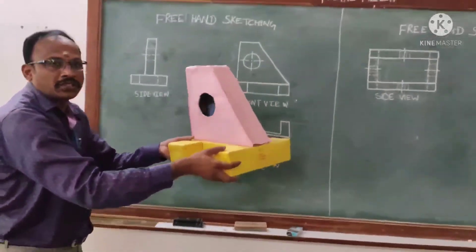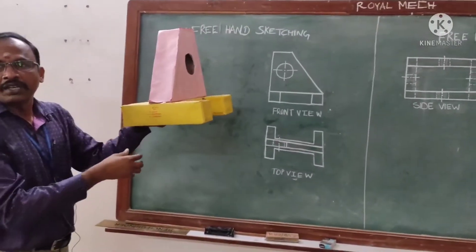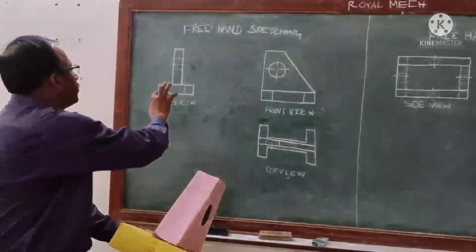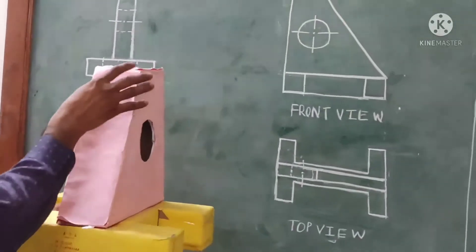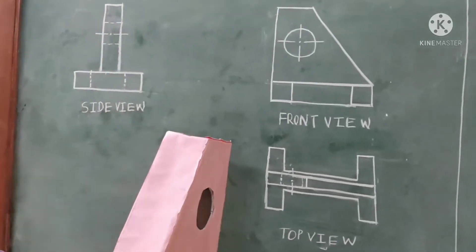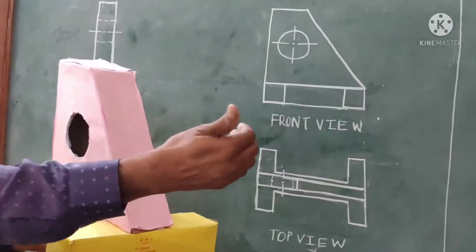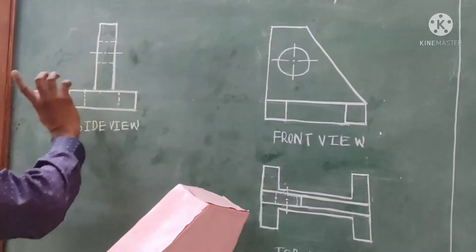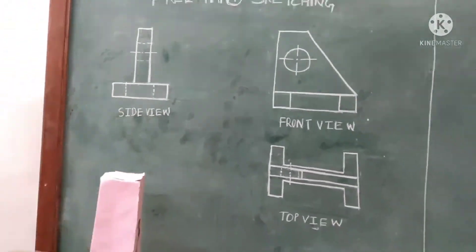Now, coming into the side view. Your right side view should be drawn on the left side for the object in first angle projection. The yellow color rectangle is drawn first. Then, the slanting surface will be seen as a vertical rectangular surface. Here also, this hole is not visible while viewing in side view, so we need to draw it as a dashed line. This is the idea about the dashed line representation for this particular object.